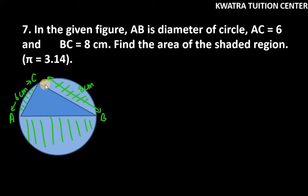So first of all, what you need to do is, you need to find AB. Now, if my AB is a diameter of a circle, then ACB is semicircle we have. So we know that angle in a semicircle is 90 degree.